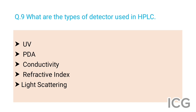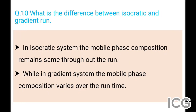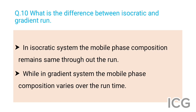The next question is: what is the difference between isocratic and gradient run? The answer is in an isocratic system, the mobile phase composition remains the same throughout the run, while in a gradient system, the mobile phase composition varies over the run time.